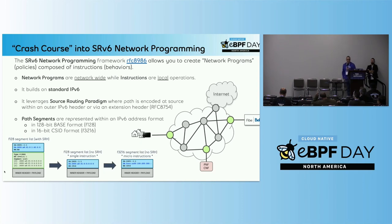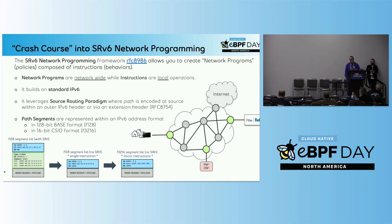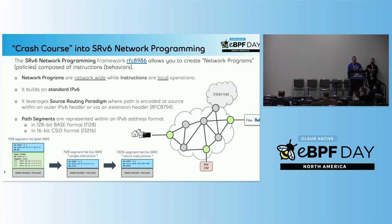So, crash course into SRV6 network programming. Some people might have their ears bleeding afterwards, but this comes directly from the IETF. It is a standard RFC, which is RFC 8986, which allows creating network programs — basically policies composed of instructions and behaviors. Network programs have a view which are network-wide; you build a network program which is end-to-end from a telecom perspective, but your instructions are locally defined. You build your code, and this is what does the instructions.